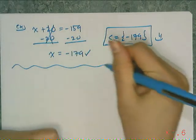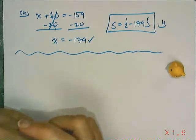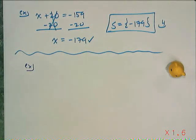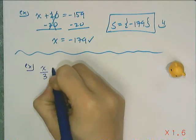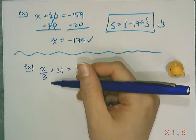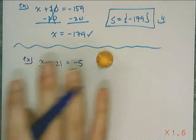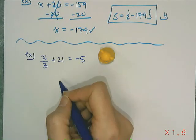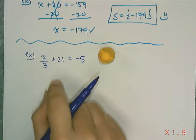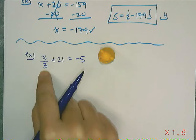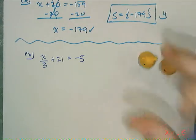Now let's look at two-step equations. Two-step equations are also one-hamster problems if you do them correctly. A two-step equation means one step is multiplication or division and one step is addition or subtraction. For example: x over 3 plus 21 equals negative 5. X has a 21 added to it and it's been divided by 3. To keep this a one-hamster problem, remember you are undoing what's been done to x — working backwards, doing order of operations in reverse. Get rid of the plus 21 first, then get rid of the divide by 3.